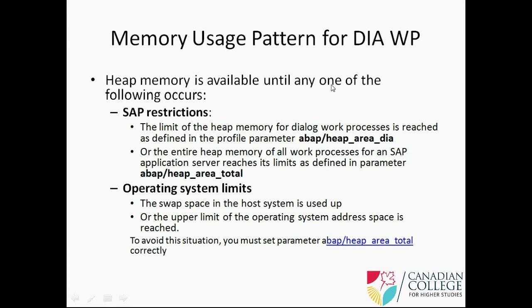Heap memory is available until any one of the following occurs. We have two types of restrictions: SAP restrictions and operating system restrictions. The limit of the heap memory for a dialogue work process is reached, as defined in the profile parameter abap/heap_area_dia.